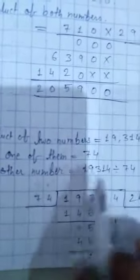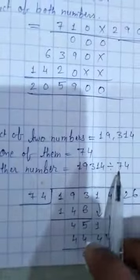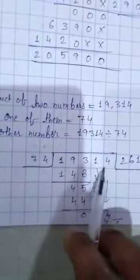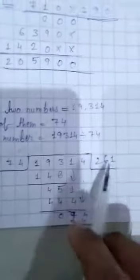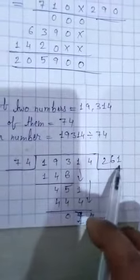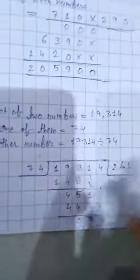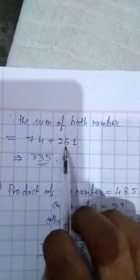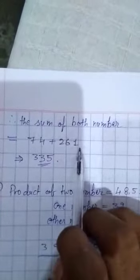Other number equals 19,314 divided by 74. When we divide 19,314 by 74, it gives 261 — that is the other number. Now we find the sum of both numbers: 74 plus 261 equals 335.